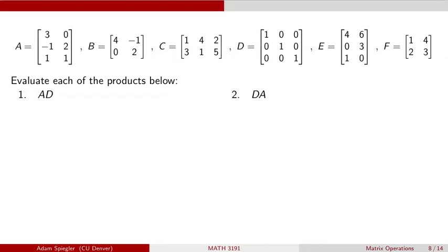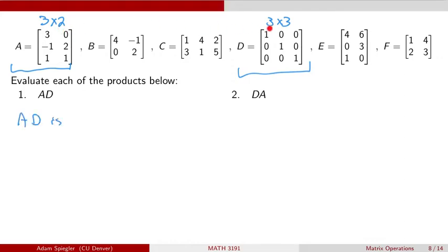We've got a number of matrices, and the ones we're working with are A and D. Considering question one, which is A times D, let's look at the size. A is a three by two matrix. D is a three by three matrix. Since this is two and this is three, they're not equal to each other, so we actually can't take the product of A and D. That operation is undefined.